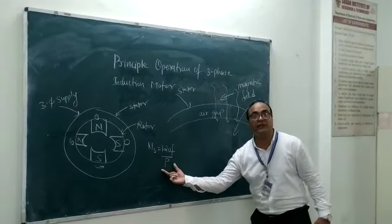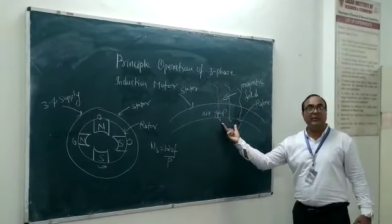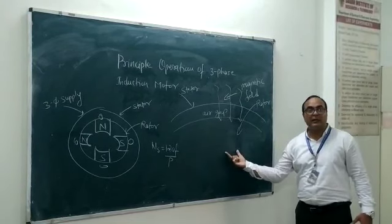That is, N equals 120F upon P. The rotating magnetic field crosses the air gap and impacts the rotor conductor.